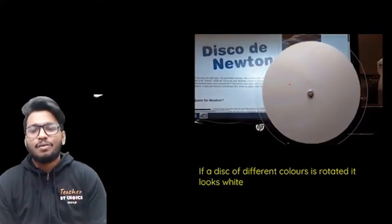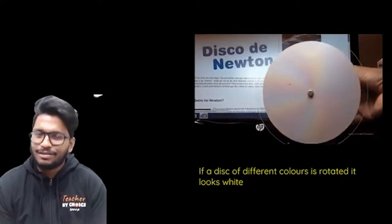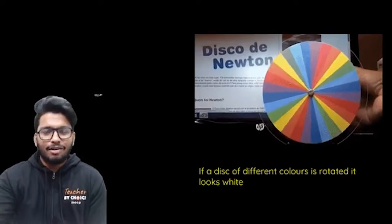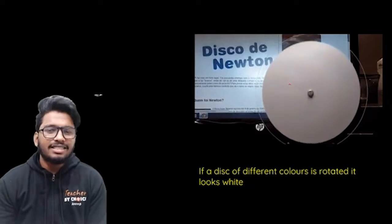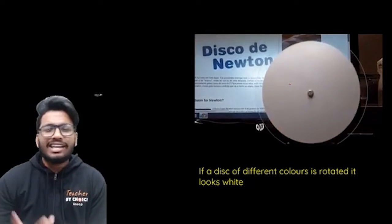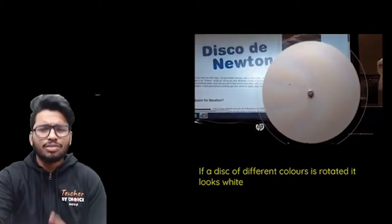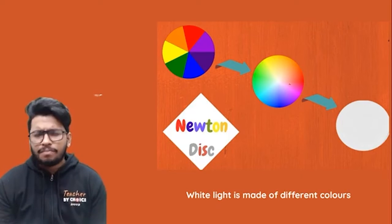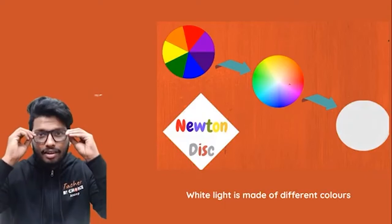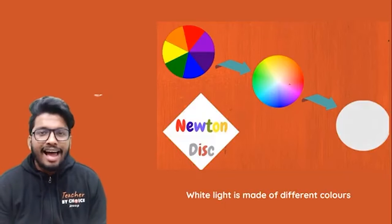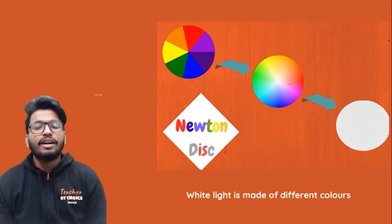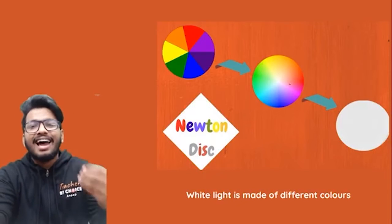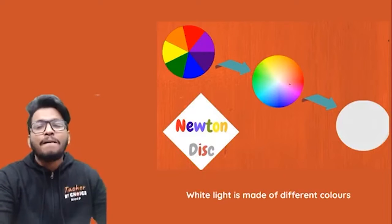What you see here is called Newton's Disc, made by Sir Isaac Newton. This disc contains the seven prominent colors — VIBGYOR. When the disc starts to rotate at a higher speed, it almost becomes whitish in color. The reason: white light is actually a combination of so many different colors. Because light travels at that high speed, we don't see the different colors — we see it as white light.